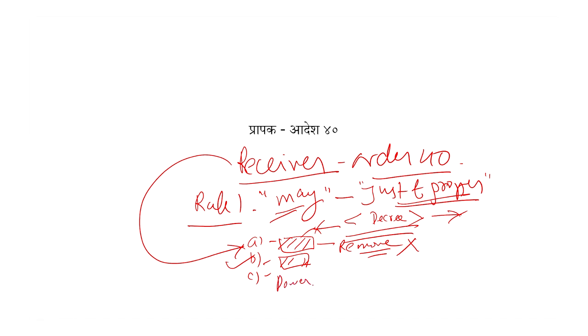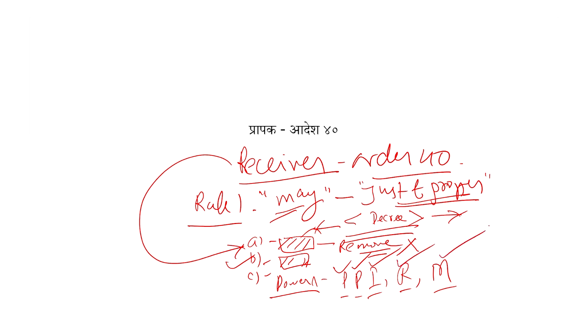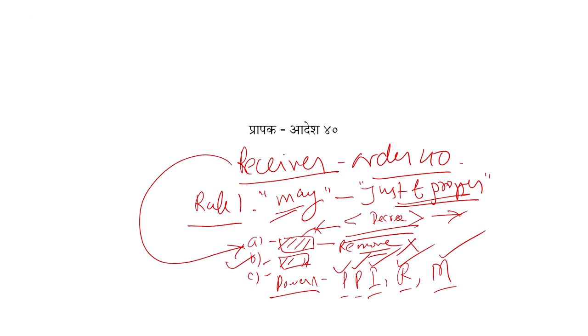Receiver ko kuch powers di jaayengi. Kaun kaun se powers hain receiver ko? Bahut saare powers hain. Receiver is property ka realization, management, protection, preservation and improvement dekhega. Yeh sari cheezein likhi gayi hain — yeh sara power hai receiver ke. Yeh isko preserve karega, protect karega, improve karega, realize karega, manage karega property ko. Muqadme dakhil karna hai — receiver dakhil karayega. Is property ko koi damage/destroy kare — receiver puri uski dekhaal karayega. Receiver is property ko improve karne ka prayas karayega — receiver iska pura management dekhega. Toh protection, improvement, preservation — yeh sab dekhega. Receiver aise kaam karayega jaise is the owner of that particular property — yeh sara uska power hai.